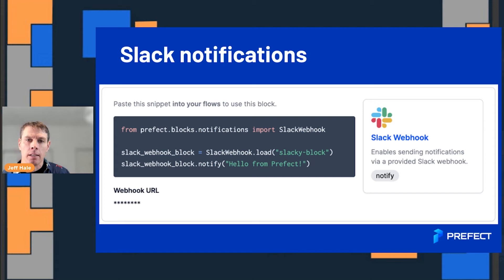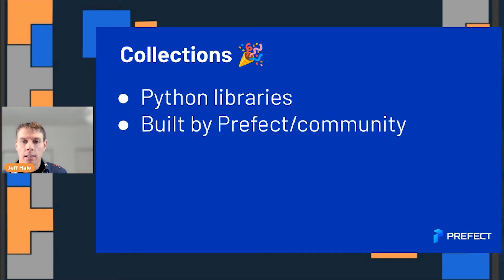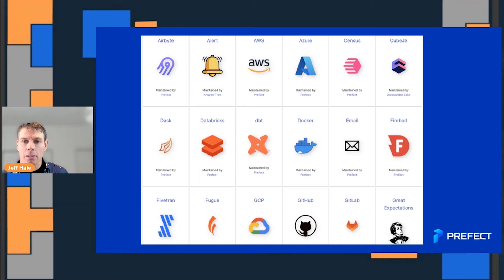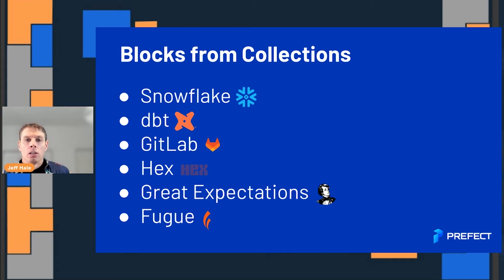Similarly, with Slack notifications, you can go get your Slack sign-in information, make a webhook URL, and then just put it into a block. Then you have the opportunity to share that information with other people and be notified via Slack when something goes well or doesn't go well with your code. And if you want more block types, we want to make it easy for you to extend the interface. There are Python libraries made by the community — we have 36 integrations, adding one every week or so.